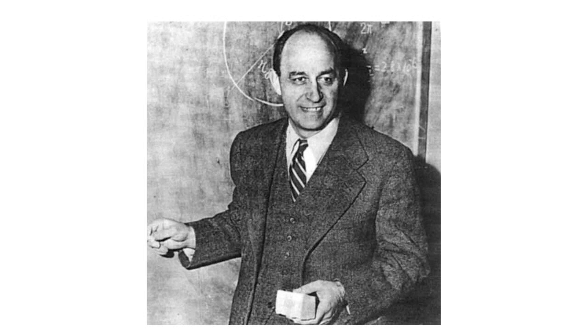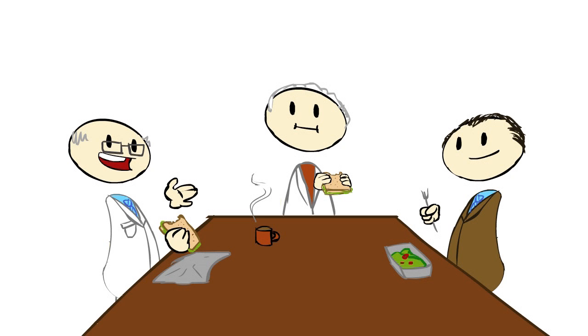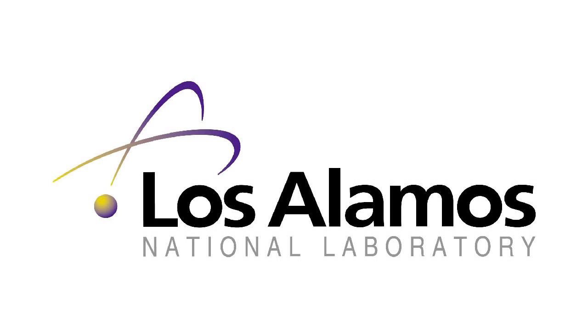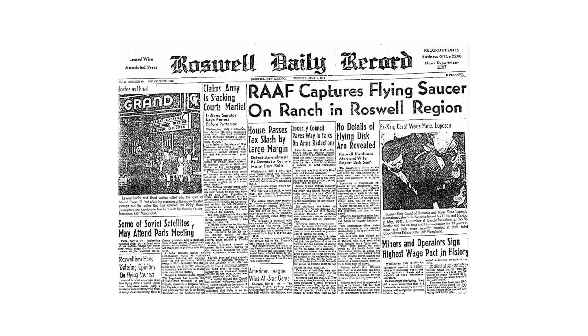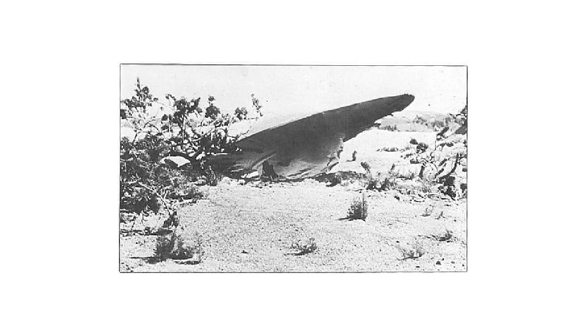I will explain. Enrico Fermi, one of the great physicists of the 20th century, was having lunch with some of his friends while working in the Los Alamos National Lab, and their conversation had just gotten to space aliens. You see, it was 1950, and since Roswell, alien sightings and reports were sort of the rage.